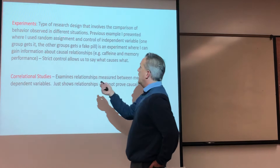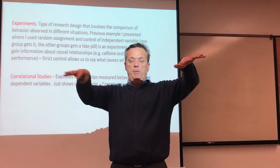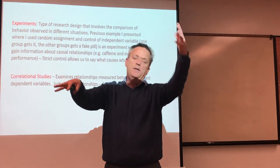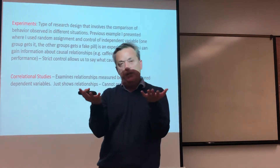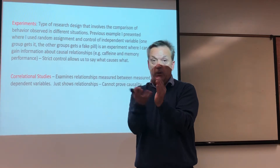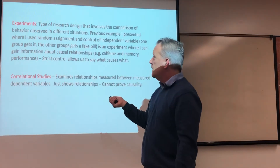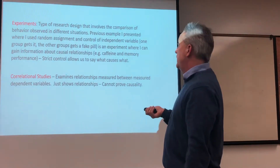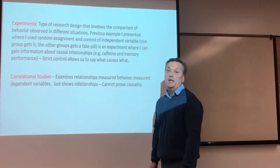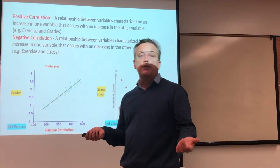A couple other topics from the text: between subjects variable and within subjects variable. A between subjects variable is a variable that changes across different groups of subjects in a research study. You find these in a between subjects design — just like the caffeine experiment where you randomly assign subjects to two groups: one group gets the treatment (the experimental group that got the caffeine) and the other group gets the fake pill. Only one group gets the treatment and the other group doesn't.